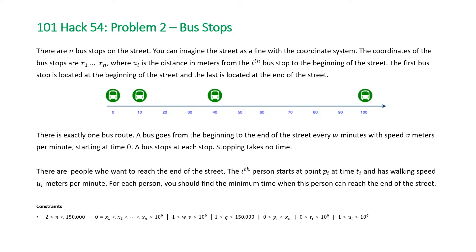The problem states there are n bus stops on the street. You can imagine the street as a line with the coordinate system. The coordinates of the bus stops are x1 to xn, where xi is the distance in meters from the ith bus stop to the beginning of the street. The first bus stop is located at the beginning of the street and the last is located at the end of the street.